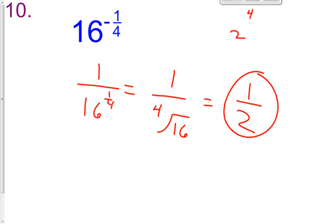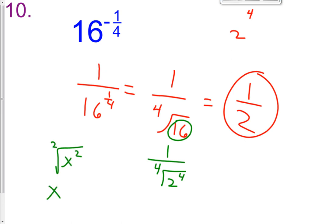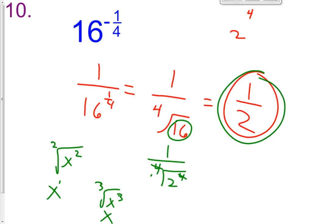To break this down further: I can rewrite 16 as 2 raised to the 4th power. When I have the 4th root of 2 to the 4th, these 4's cancel because 4 divided by 4 is 1, so the 2 just comes outside the radical and we get 1 half. The 4th root of 16 is the same thing as the 4th root of 2 raised to the 4th, and the 4's cancel, so we just get 2 outside the radical. Our answer is 1 half.